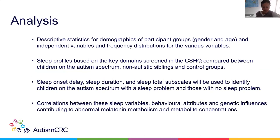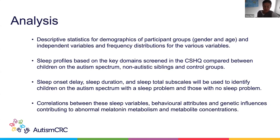The analysis will report descriptive statistics on all our participant groups, and then we'll look at sleep profiles based on the key domains screened in the Childhood Sleep Habits Questionnaire, compared between autistic children, non-autistic siblings, and controls. Within the children on the spectrum group, we'll look at those that have a sleep problem and those that don't, based on measures of sleep onset delay, sleep duration, and total sleep. We'll then look at correlations between these variables and our behavioural attributes and biological measures, including genetic influences contributing to abnormal melatonin metabolism, and metabolite concentrations examined within subgroups of children on the autism spectrum.